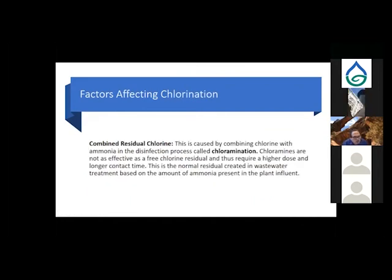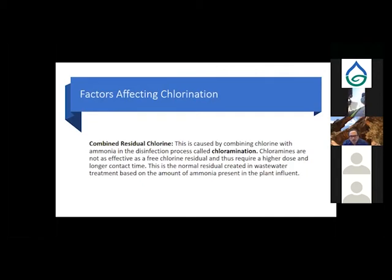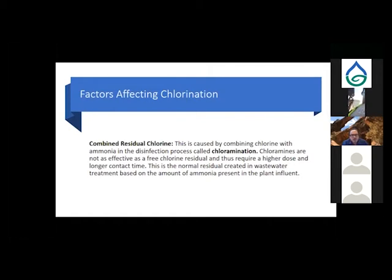Combined chlorine residual — the first hump on the breakpoint curve — is caused by combining chlorine with ammonia in a process called chloramination. Chloramines are not as effective a disinfectant as free chlorine, requiring a higher dose and longer contact time. This combined residual is also the normal residual created in a wastewater plant due to the high ammonia present in influent water.